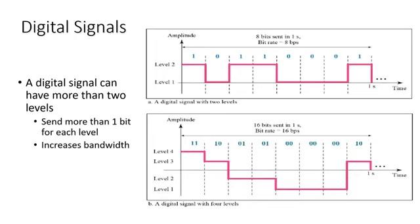In addition to being represented by an analog signal, data can also be represented by a digital signal. It is easier to present data as digital, since it commonly has two levels: zero and one. For example, in figure A, an 8-bit data can be sent in one second, where a bit of one can be encoded as a positive voltage and a bit of zero as zero voltage. Therefore, we have a bit rate of 8 bits per second.